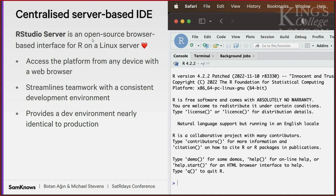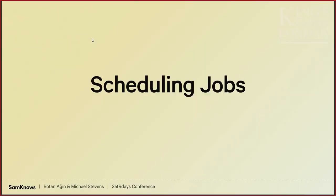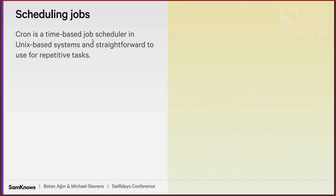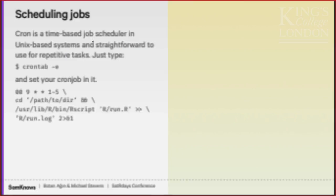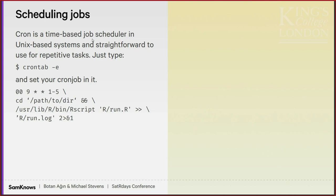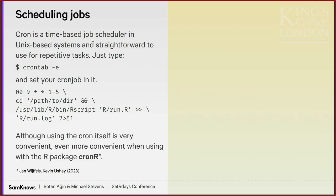Now we have a place to work, we need to schedule our jobs. In our case, the simplest solution was using cron — a time-based job scheduler in Unix-based systems. It's quite straightforward for repetitive tasks. You type crontab -e and set your task. This piece of code, for example, runs every Monday to Friday at 9 o'clock, changes the working directory, runs an R script, and appends the standard output to a log file. But this is an R conference, and there's a better way to do this.